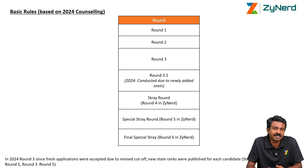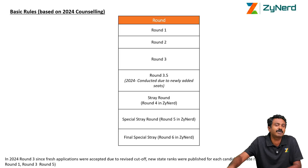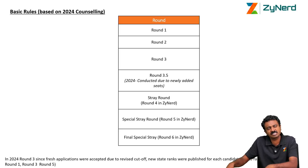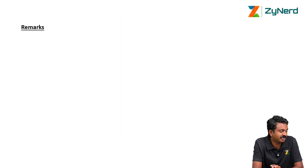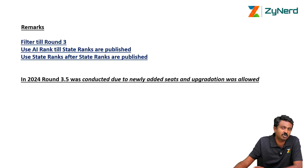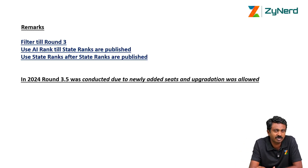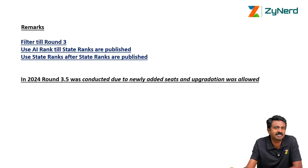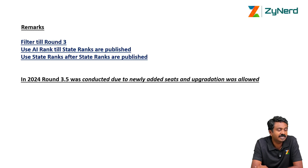If you see rank 300 taking a seat in round 1 and again in round 2, it is likely the same candidate. If it becomes 305 in round 3, it means new candidates were allotted in between — but your reference is still around rank 300. Always filter till round 3 unless you want to take a risk on the stray round. Note that in Telangana, once you are allotted a seat and do not join, you will not be eligible for counseling later — so be clear from round 1 itself. Stray round eligibility is not available if you do not join. Use All India rank until state ranks are published, then use state ranks.